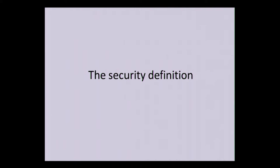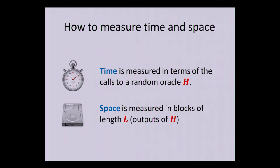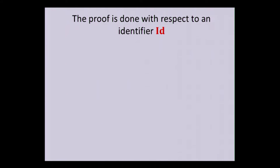So let's think a little bit about what would be security definition of something like this. The first natural question is how to measure time and space. We will measure time in terms of the number of calls to the random oracle. That's basically the only thing you can do here. If you want to have some formal proofs, you have to use a random oracle model. And the space will be measured in blocks of length L, which think of it as the output of a hash function. It's like 256 bits or something like this.